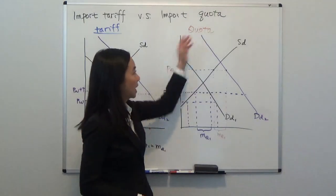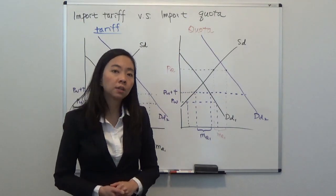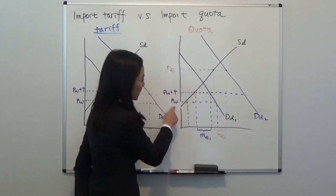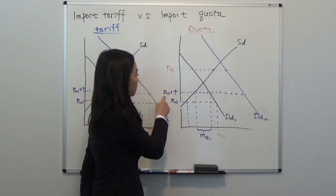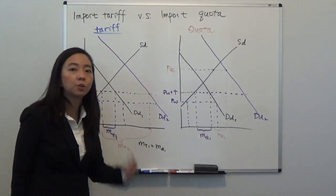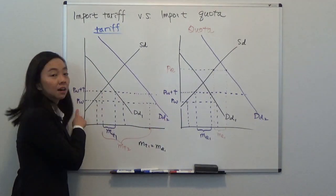The government tells you you can only import MQ1 amount, and as a result the price goes up from PW to PW+T. On the left-hand side, the government tells you you have to pay import tariff, so the price has gone up from PW to PW+T.